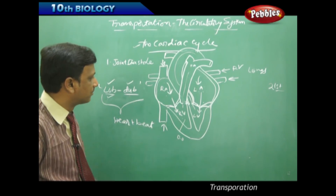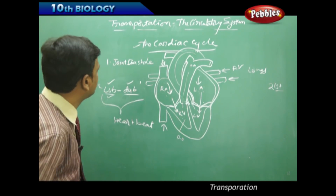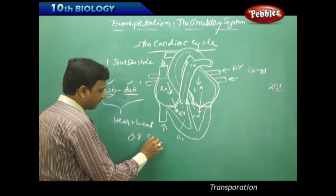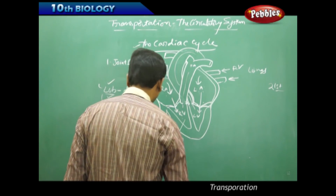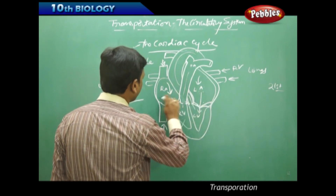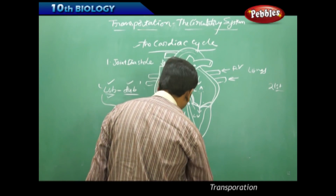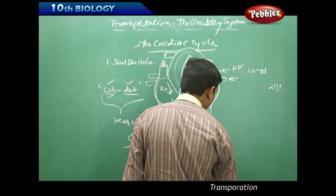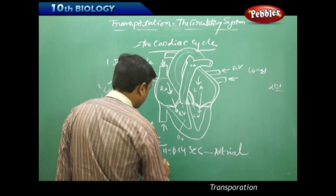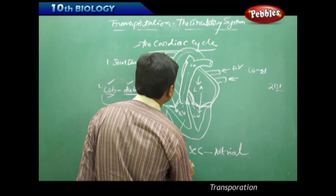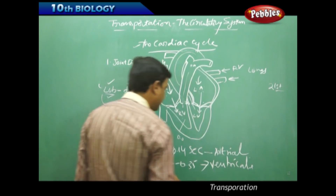The total cycle of contractions and relaxations is called the cardiac cycle. The total cycle takes 0.8 seconds to complete one cardiac cycle. The contraction of the atria — atrial systole — takes 0.11 to 0.14 seconds, whereas ventricular systole — the contraction of the ventricles — takes 0.27 to 0.35 seconds.